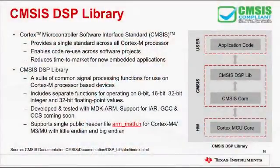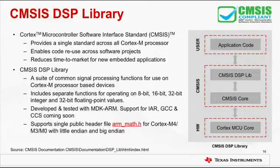In order to provide a single standard across all Cortex-M-based processors and enable code reuse, ARM has developed a vendor-independent hardware abstraction layer called CMSIS—the Cortex Microcontroller Software Interface Standard. In addition to other components, CMSIS consists of a DSP library which contains over 60 functions in both fixed-point and single-precision floating-point implementations. The CMSIS DSP library includes separate functions for operating on 8-bit, 16-bit, 32-bit integer, and 32-bit floating-point values. It has been developed and tested with MDK-ARM and can also be compiled on tool chains such as TI's Code Composer Studio. The library supports a single public header file for Cortex-M4, M3, and M0 with little-endian and big-endian support.